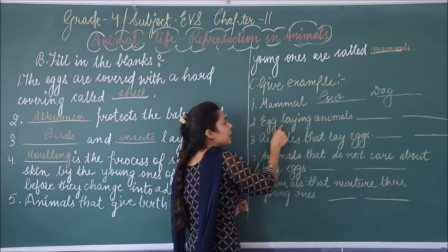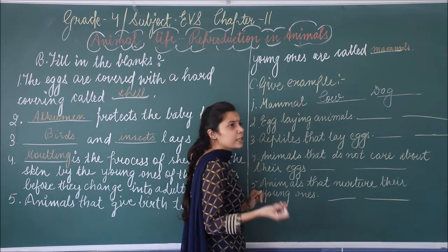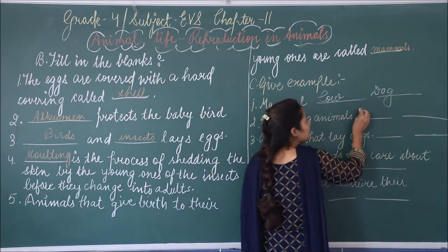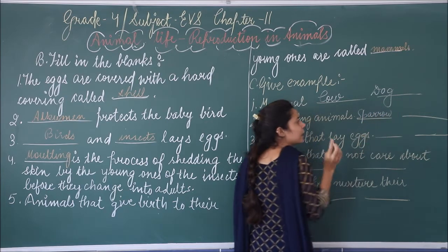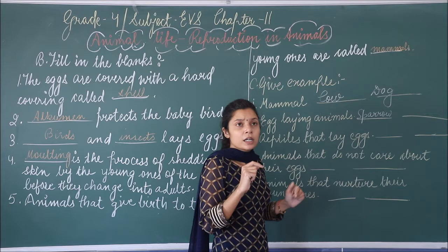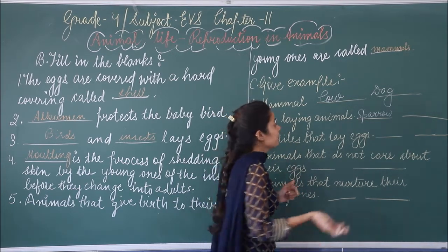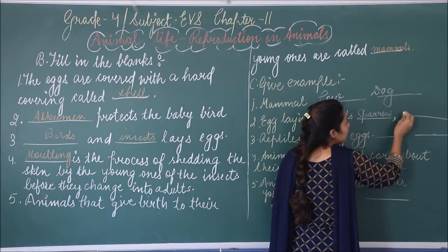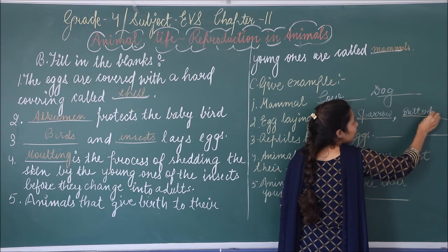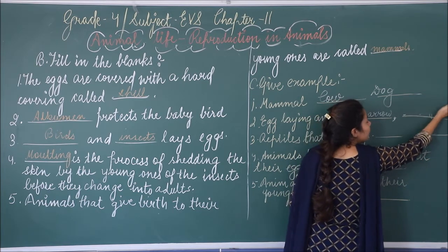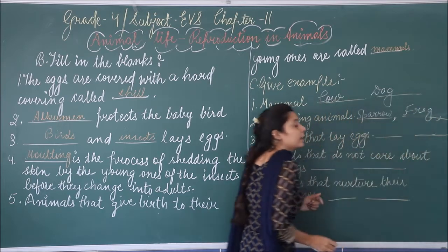Second: egg-laying animals — wo animals jo egg lay karti hai. Hum kisi bhi bird ka naam likh sakte hain, for example sparrow. Sparrow egg lay karti hai. Ya phir ek insect ka naam — butterfly. Frog bhi egg-laying animal hai, frog bhi toh egg lay karti hai in the water.